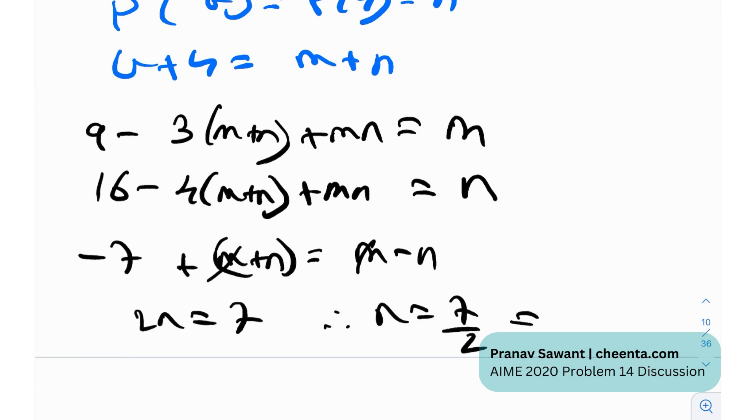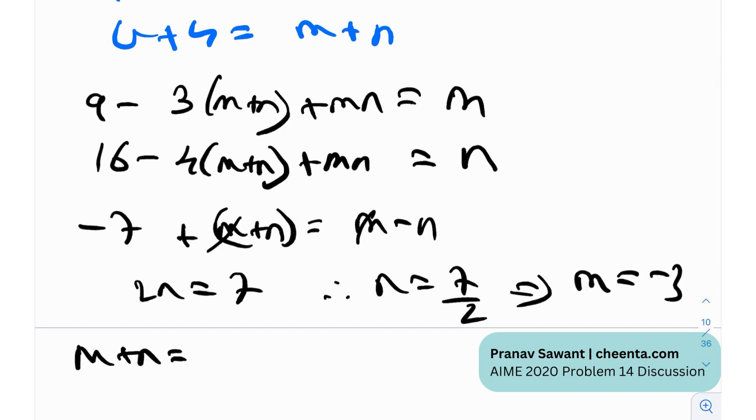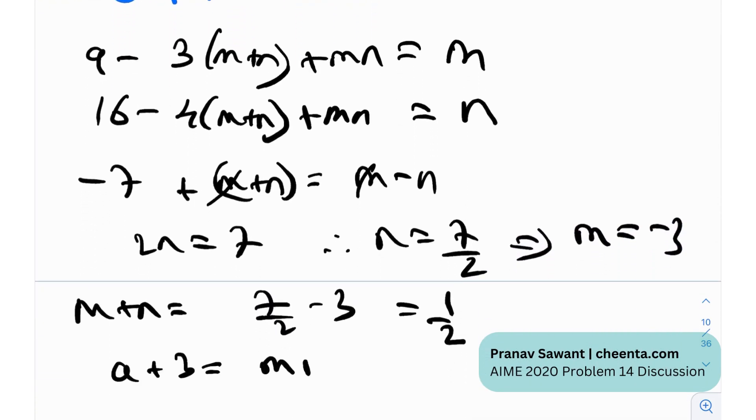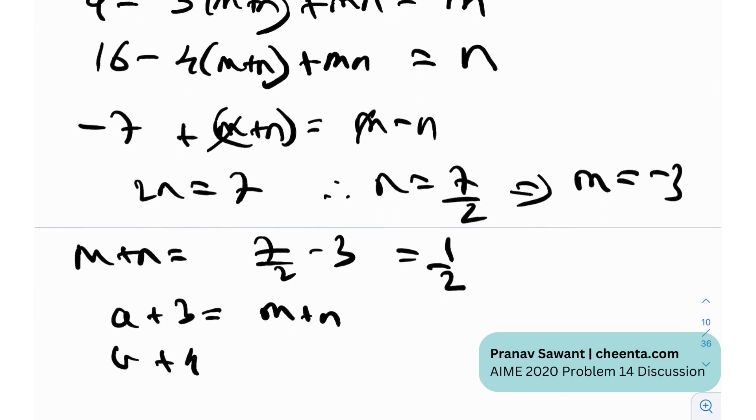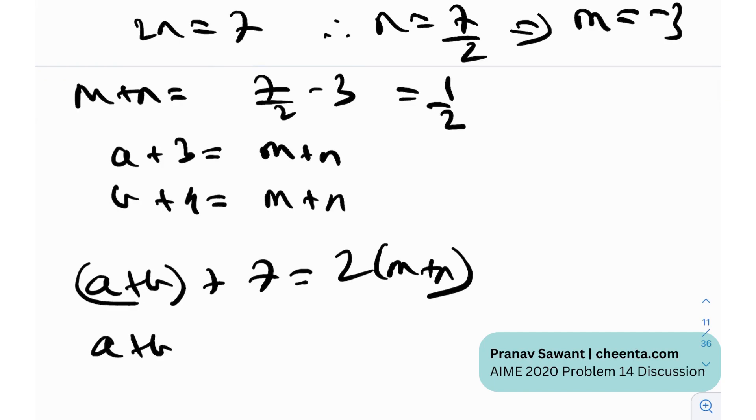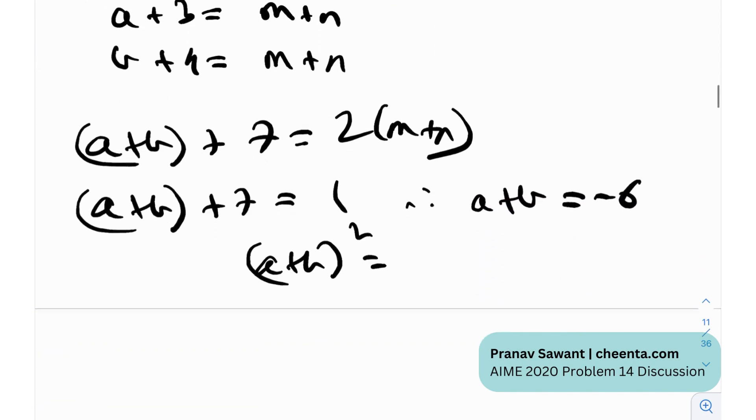Therefore n equals 7 by 2, and which essentially implies that m equals minus 3. Now why is that great? Because then we can essentially obtain the values a and b. So m plus n is 7 by 2 minus 3 equals 1 by 2. And a plus 3 was m plus n, and b plus 4 was also m plus n. And if we add these two equations, I'll get a plus b plus 7 equals twice of m plus n. In other words, a plus b plus 7 equals 1. So therefore a plus b equals minus 6, and a plus b whole squared equals 6 squared, that is 36.